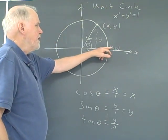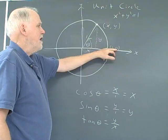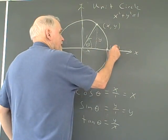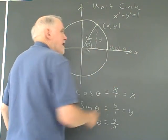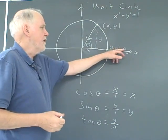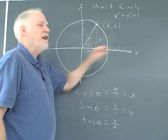And so the cosine of zero degrees is one, the sine of zero degrees is zero, and zero over one is zero. That's the tangent of zero degrees. So you have the cosine, sine, and tangent.